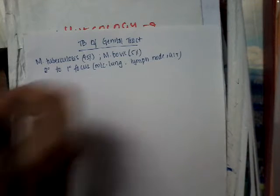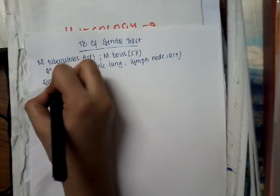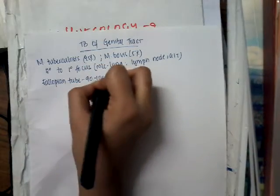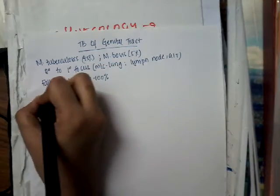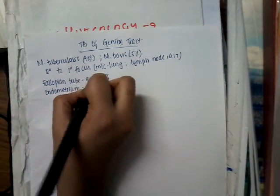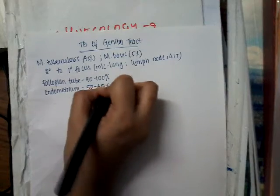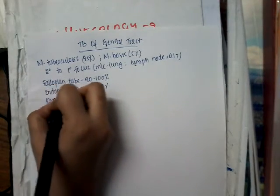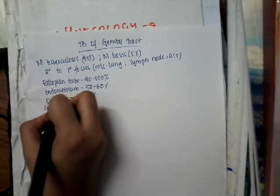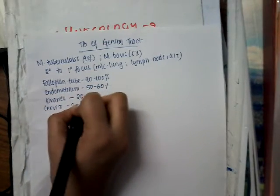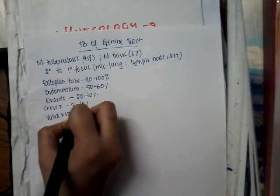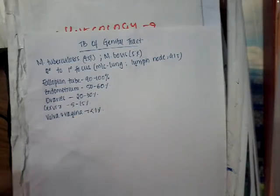Genital tract infection is most common in the fallopian tubes, occurring in 90 to 100% of cases. It first starts in the fallopian tubes, then spreads to the endometrium (50 to 60%), then to the ovaries (20 to 30%), then to the cervix (5 to 15%), and finally to the vulva and vagina, which is least common at less than 1%.